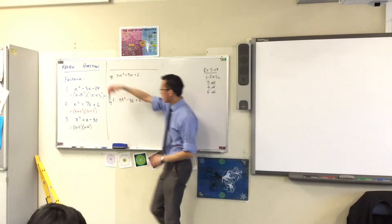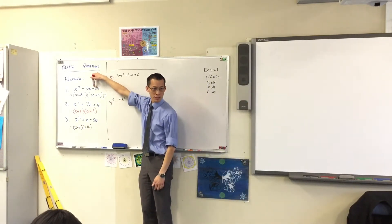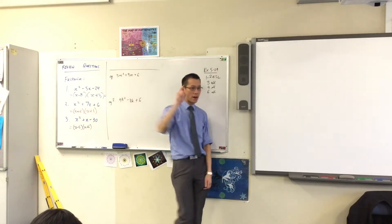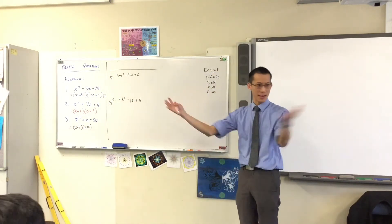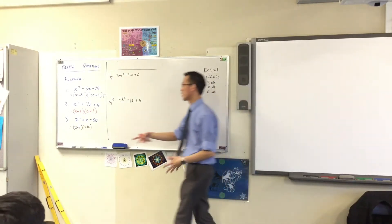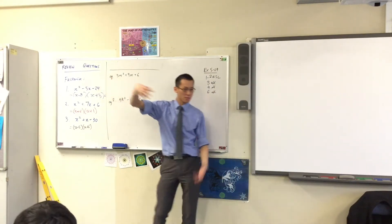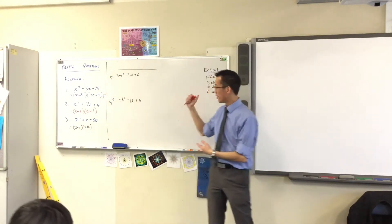Do you remember we noticed before, if this last one is negative, this last number, the constant, one has to be negative and one has to be positive, because if both are positive, you'll get plus signs everywhere. If both are negative, you'll still get a plus sign here because they cancel each other out. So, looks perfect.